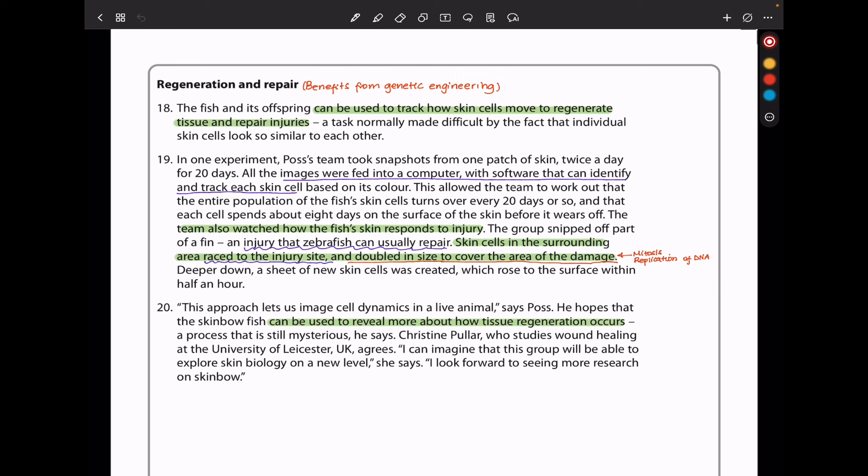The team also watched how the fish skin responds to injury. The group snipped part of a fin, an injury that zebrafish can usually repair. Skin cells in the surrounding area rushed to the injury site and dabbed into sites to cover the area of the damage. Deeper down, a sheet of new skin cells was created, which rose to the surface within half an hour. This approach lets us imagine cell dynamics in a live animal, says Poss. He hopes that the skinbow fish can be used to reveal more about how tissue regeneration occurs, a process that is still mysterious, he says.